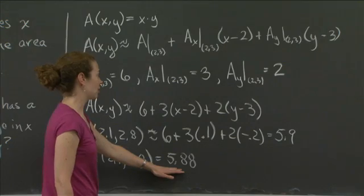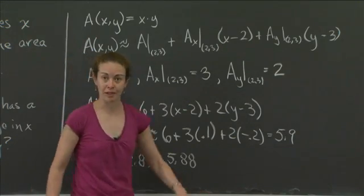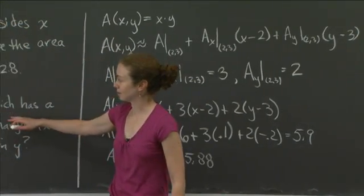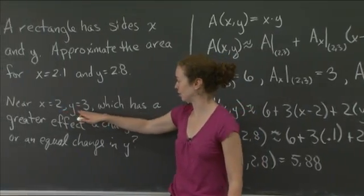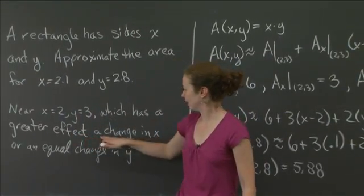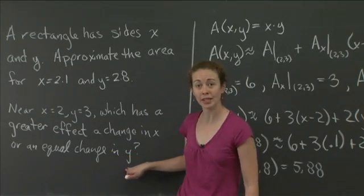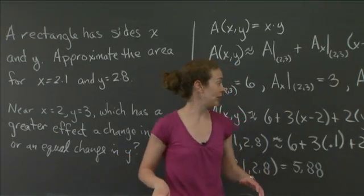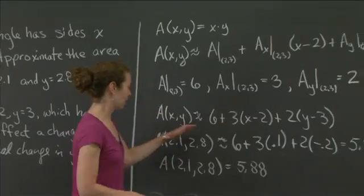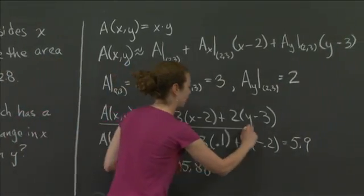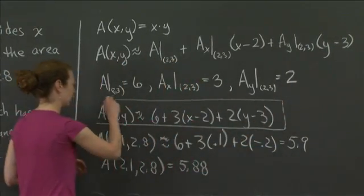OK. Now I just have to answer the second part of the question. So let me remind us what the second part was. It was near x equal 2 and y equal 3, which has a greater effect, a change in x or an equal change in y. And to do that, it's really easiest to come back and look at maybe this line. I'll underline this line right here. Actually, I'll box it.